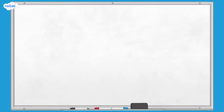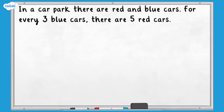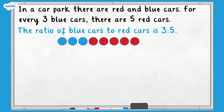In a car park there are red and blue cars. For every three blue cars, there are five red cars. What is the ratio of blue cars to red cars? Pause here and write down the ratio, then unpause to check your answer. The ratio of blue cars to red cars is three to five. Now use this ratio to answer the questions.